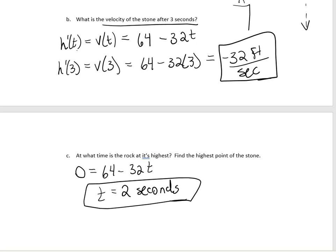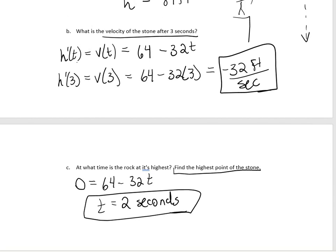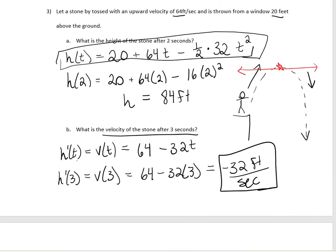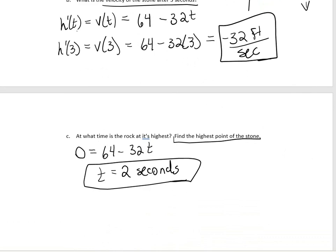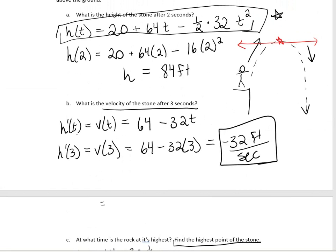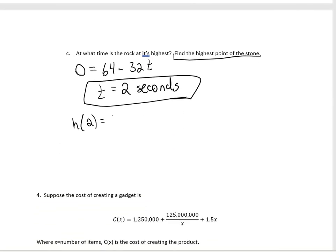To find the highest point of the stone, we don't use the velocity function — we go back to the height function. The height after two seconds is 84 feet, which we already found.